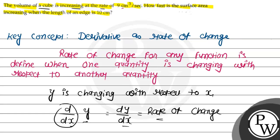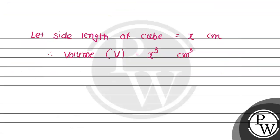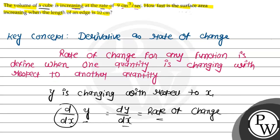Here the change given is the increasing rate of 9 cm cubed per second. This is time-based, so we can write dV/dt equals 9 cm cubed per second. That is what has been given.